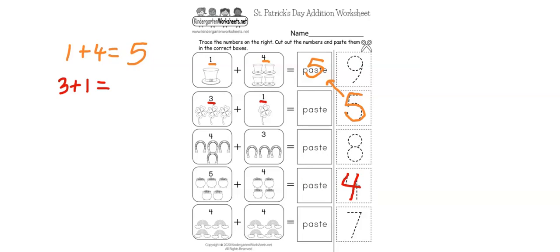So 3 plus 1 is 4. Let's do the next one: what is 4 plus 3? 4 plus 3 equals how much? Let's count: 1, 2, 3, 4, 5, 6, 7. So 4 plus 3 equals 7.